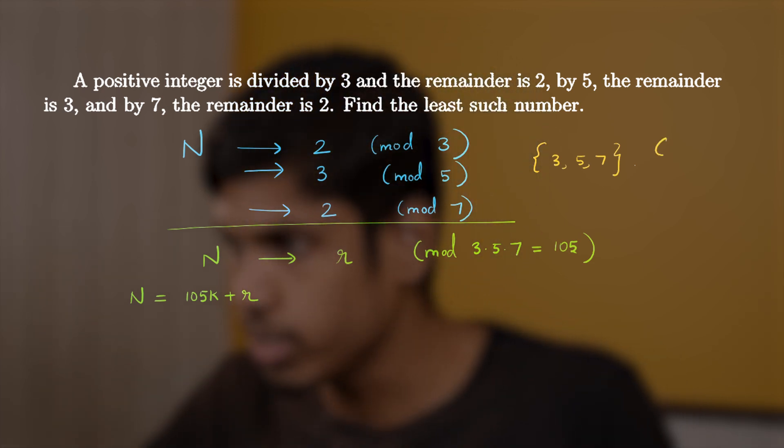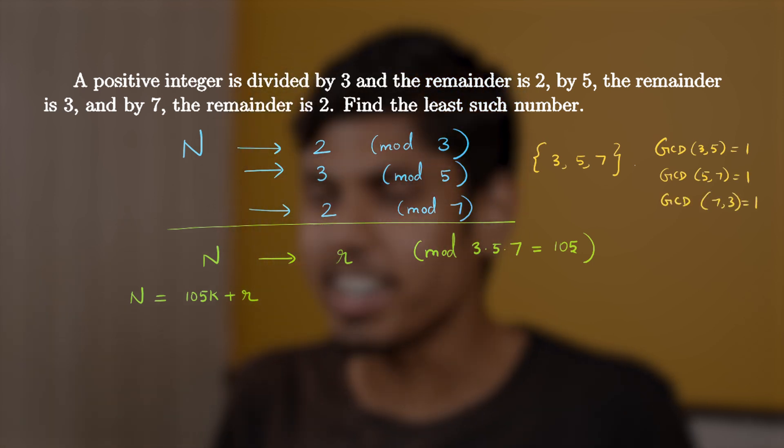So GCD of 3, 5 is 1. And GCD of 5, 7 is 1. And GCD of 7, 3 is also 1. And of course finding that remainder r requires some effort. And let's do that.